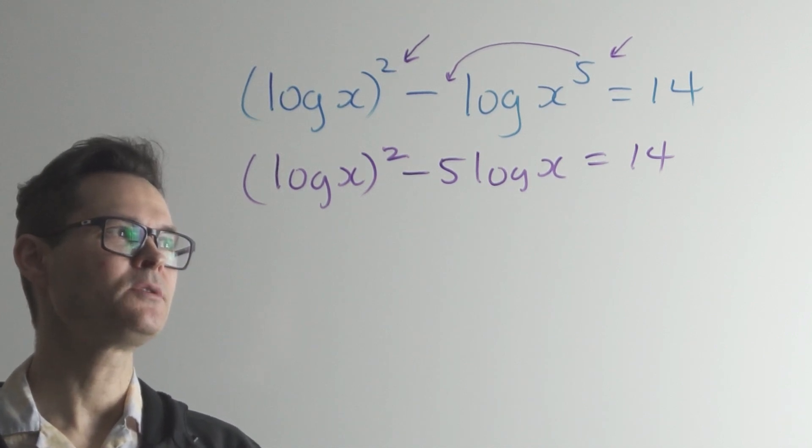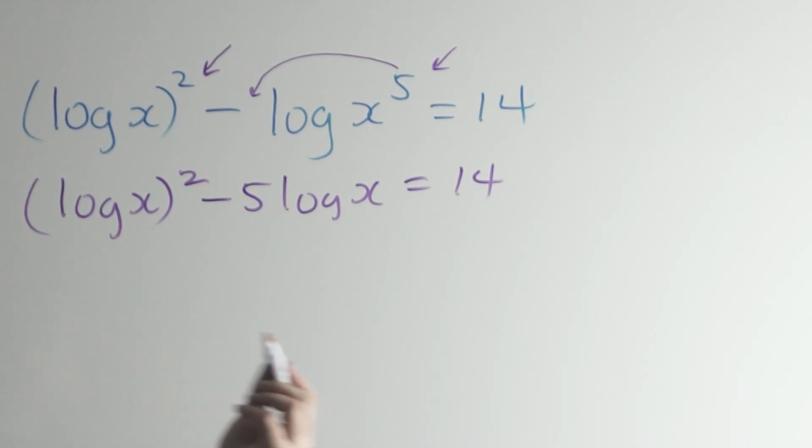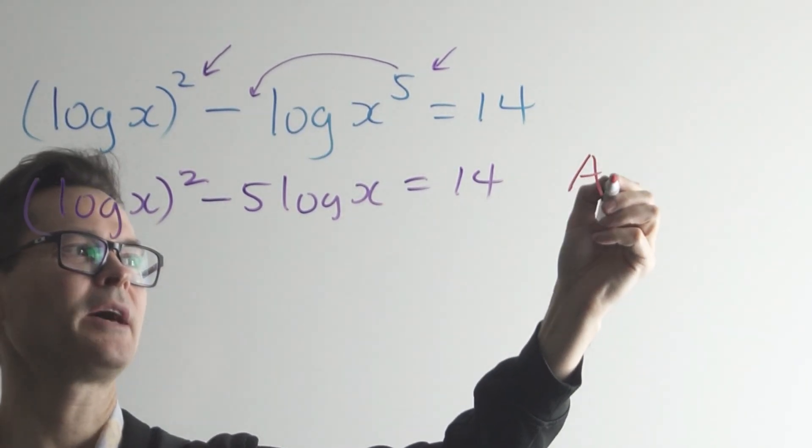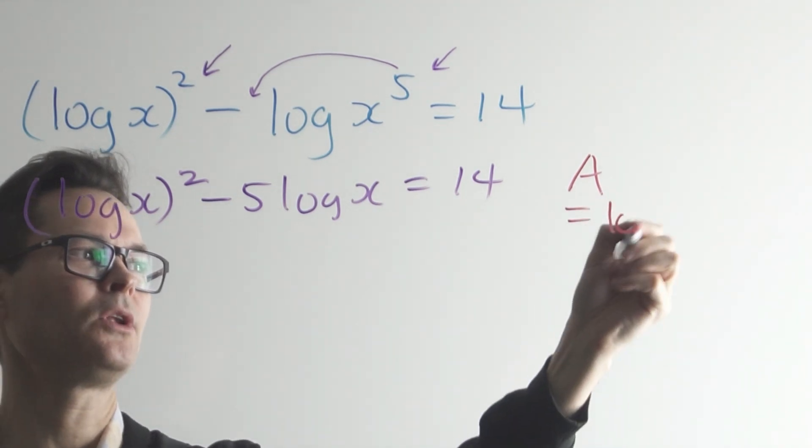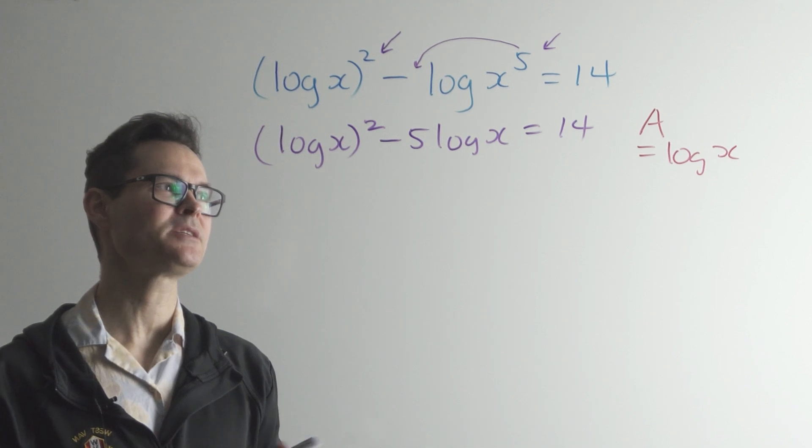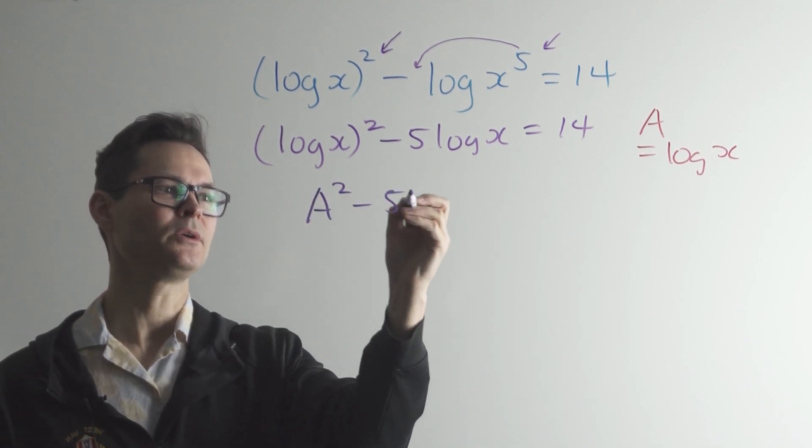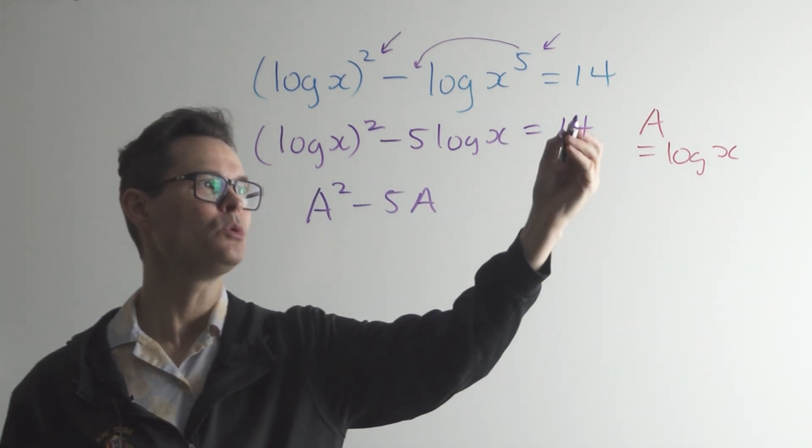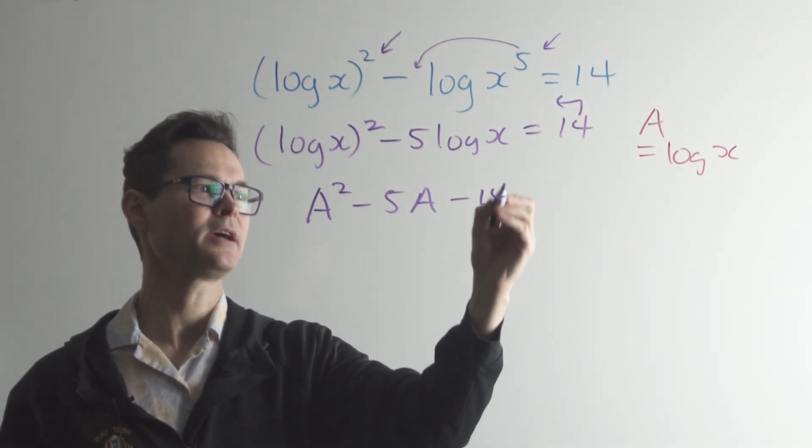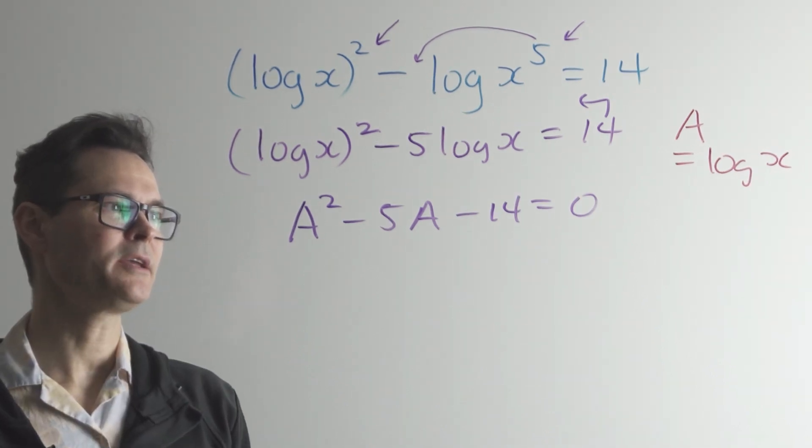So what some students like to do is they like to do a little substitution. They like to let log x be another letter. So you can let A equal the log of x. You don't have to do it this way, but sometimes it makes it easier. So now you're solving something that looks really familiar. I'm going to move the 14 over to the other side to make it in the form of a quadratic equation.